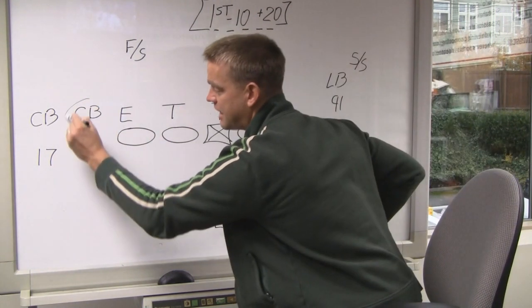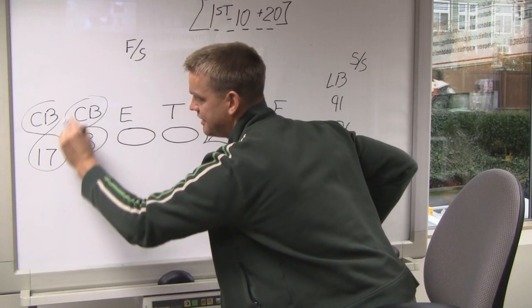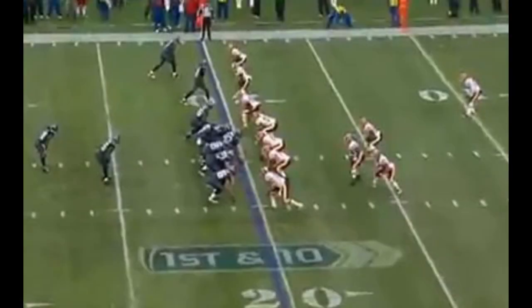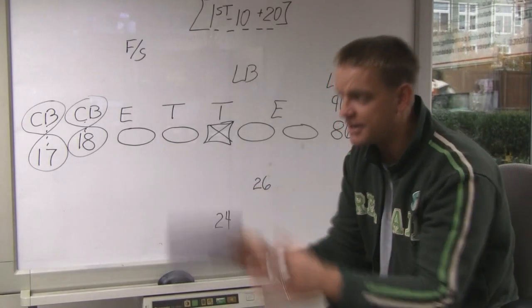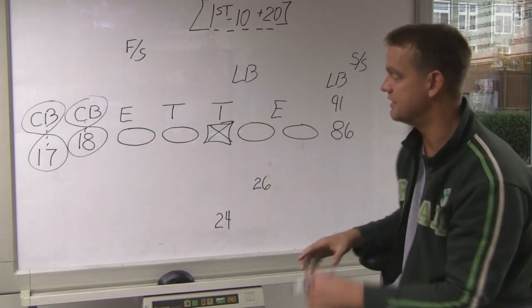Now, you know the Redskins are in man-to-man for a couple reasons. Number one, they're in press coverage and as you watch that play, you'll notice those eyes of the DB never come off the receiver. Now, sometimes those guys can press and bail and show you different looks. When they're locked in and they're staring at that receiver and they're not looking at the quarterback, a great indicator, it's man-to-man coverage.